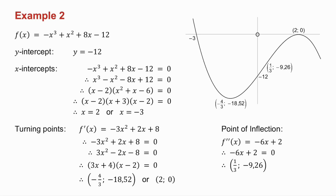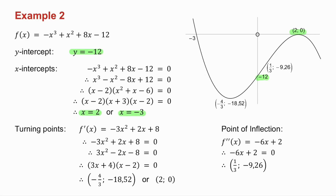For the point of inflection, I take the derivative of the derivative, make it equal to zero, and solve for x. I get the corresponding y-value by substituting into f of x. I then plot: the y-intercept, the two x-intercepts, the turning points — notice that one x-intercept is the turning point — and there is my point of inflection.